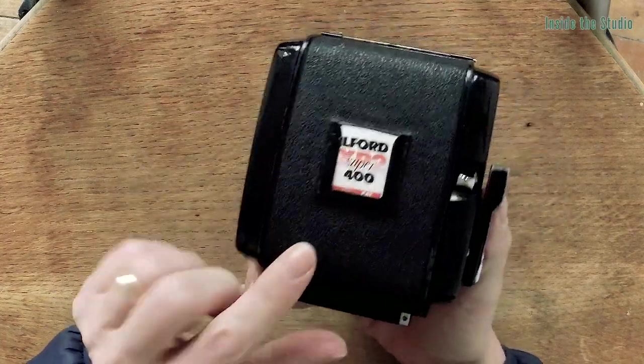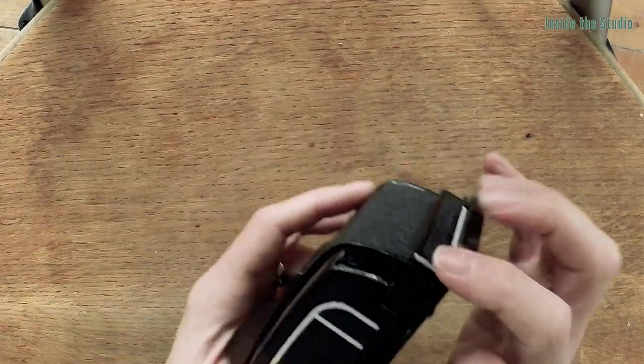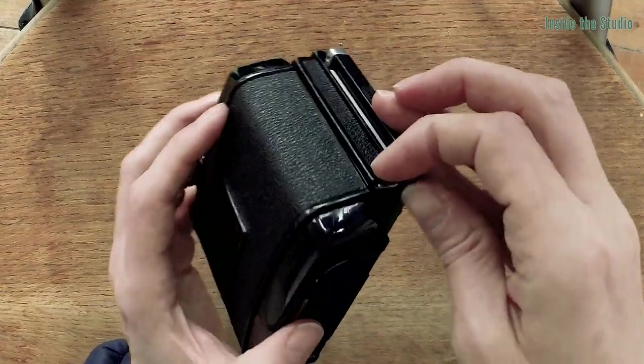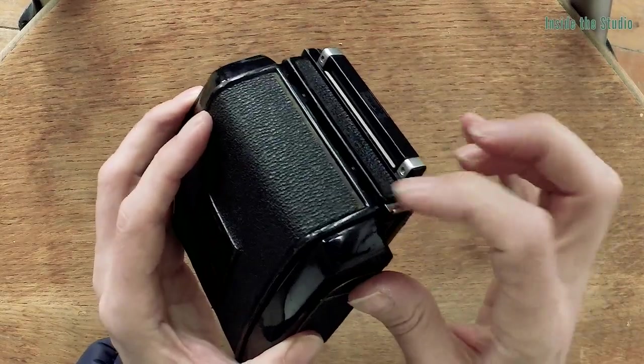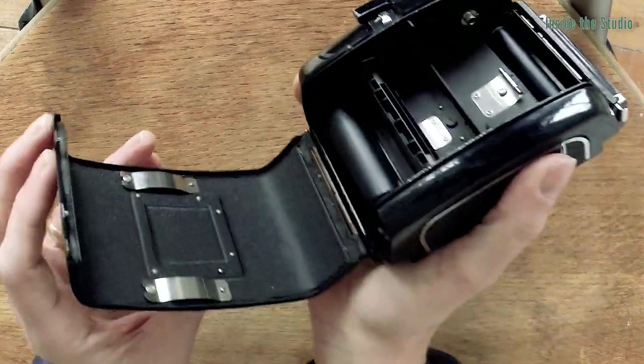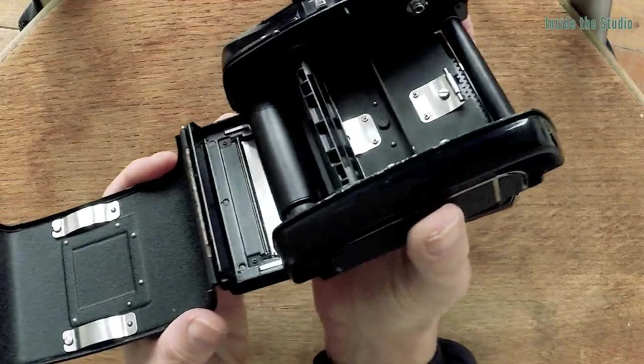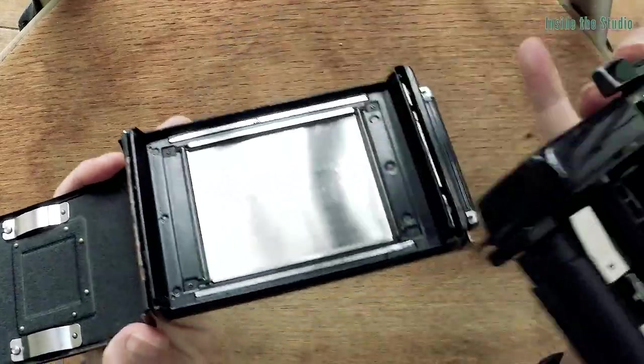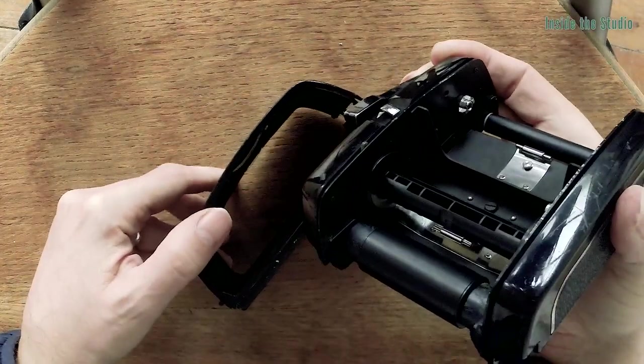This, obviously the last time I shot this, I shot Ilford XP2. To open the back here, there's a little metal piece and you pull it out. If I open the back, you'll see that this is actually two pieces. So this lifts out, so that's the dark slide and the rear cover, which I'll just put down there.